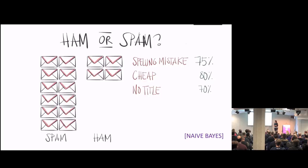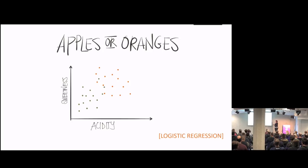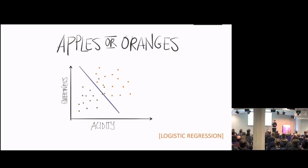Then we have another classification algorithm — logistic regression. Here we have apples and oranges based on sweetness and acidity. Think about how you'd divide them. Maybe like this — we're back at the straight line, which is why it's called regression, but in this case it's called logistic regression. Logistic regression says: are you above or below this line? If above, you're one thing; if below, you're something else. This is imperfect — some apples will be classified as oranges. The further from the line, the more probable you're classifying correctly. It's still a guess.